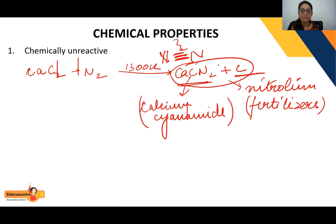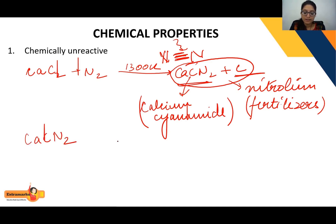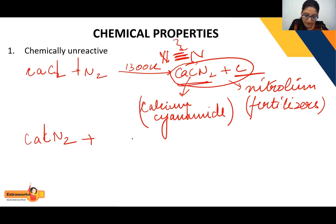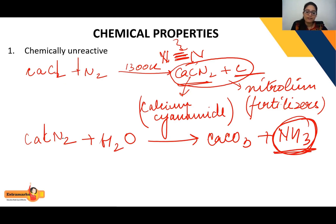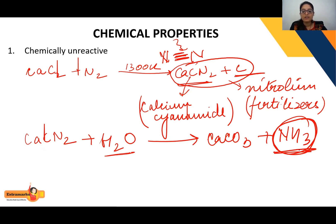Calcium cyanamide (CaCN₂) when reacted with water gives CaCO₃ and also leads to the formation of ammonia (NH₃). So the formation of ammonia also occurs from this reaction when calcium cyanamide is reacted with water.